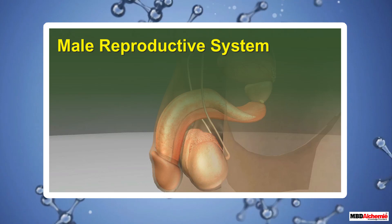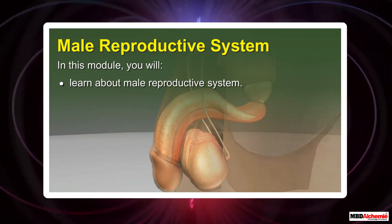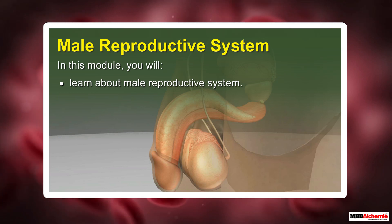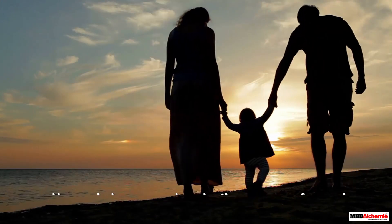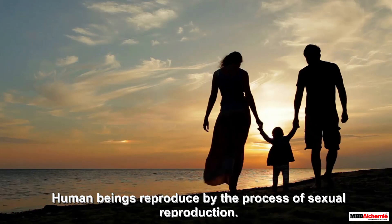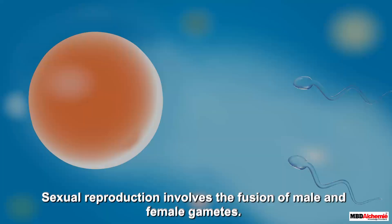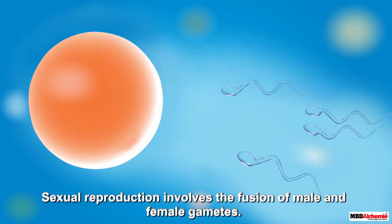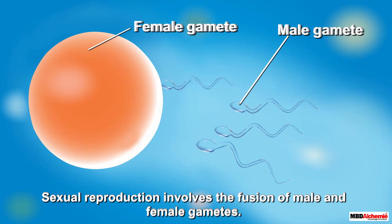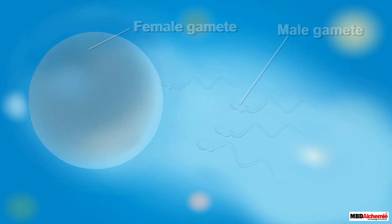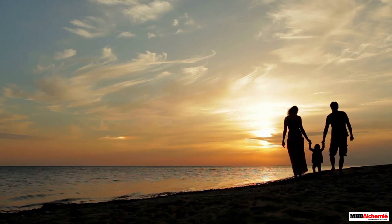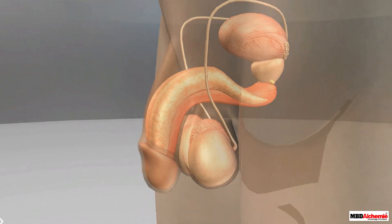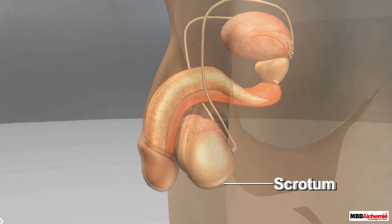In this module you will learn about the male reproductive system. All living beings reproduce to form new generations of organisms. Human beings do so by the process of sexual reproduction, which involves the fusion of male and female gametes and involves both male and female partners. The male reproductive organs consist of testes, scrotum, vas deferens, urethra, and penis.